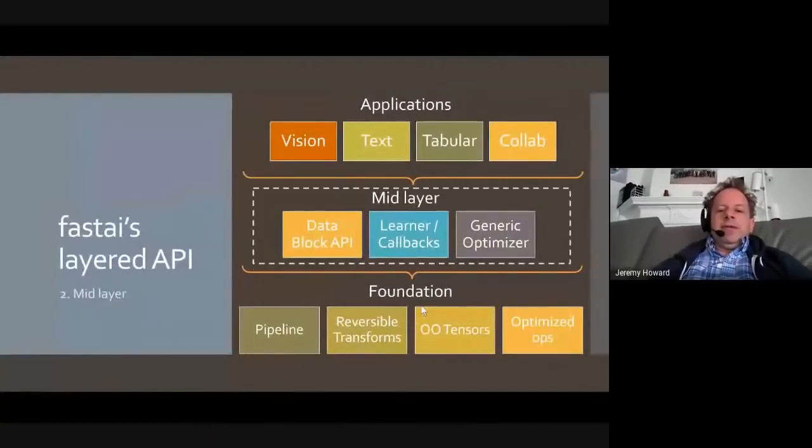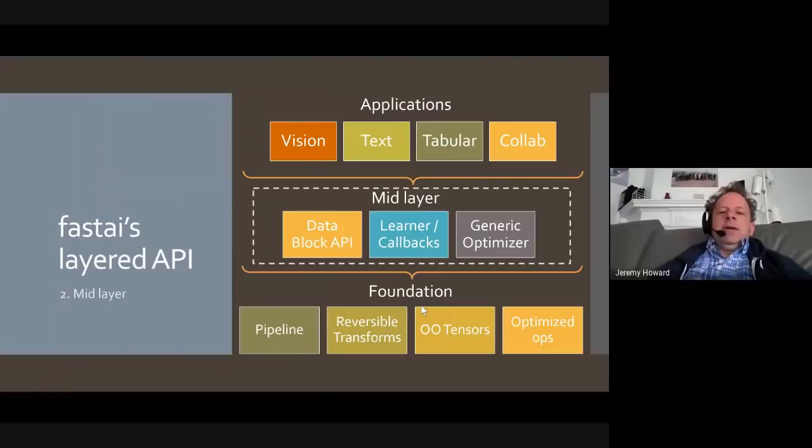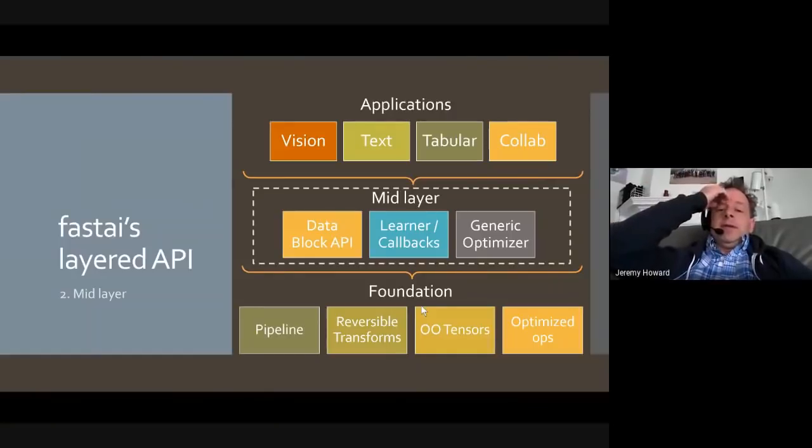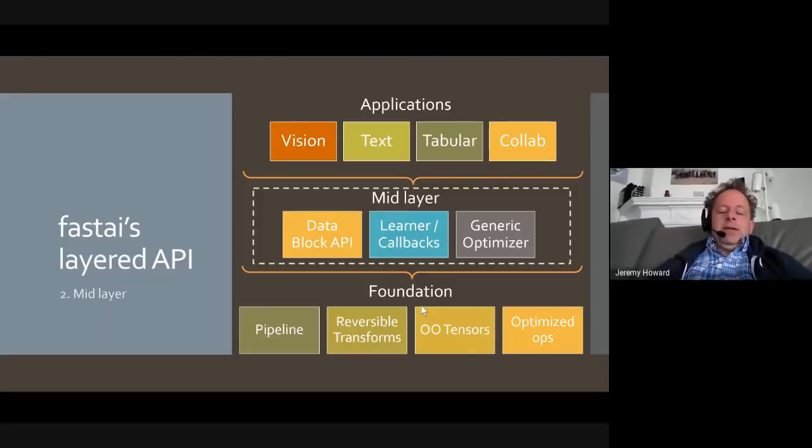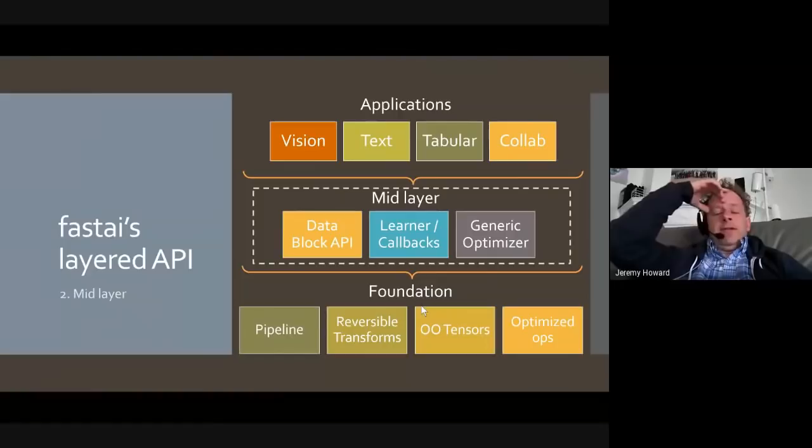So these kind of carefully curated defaults and algorithms and high-level APIs that do things right for you the first time, even for experienced practitioners, can give you better results faster. But it's actually the other pieces that are more, I think, interesting for a Swift conversation. Because as the deeper we go into how we make that work, the more stuff you'll see which will be a great fit, I think, with Swift. So the mid-layer API is something which is largely new to Fast2.